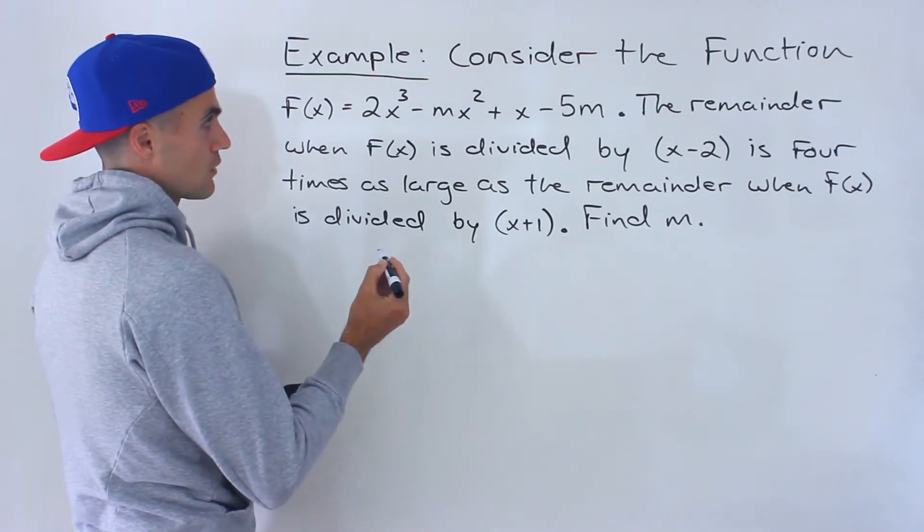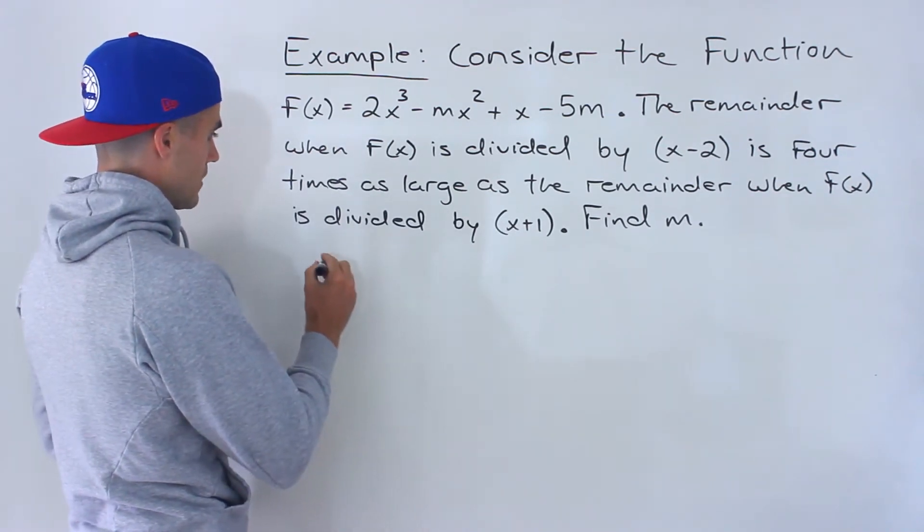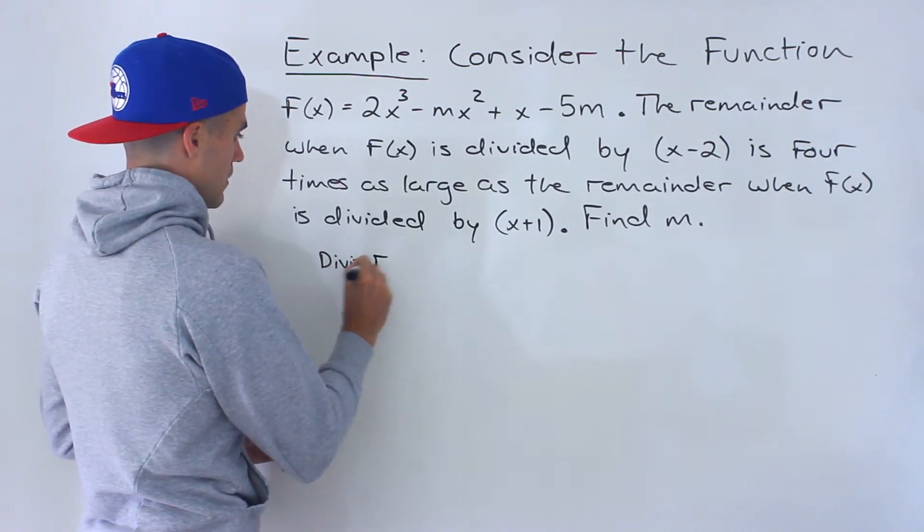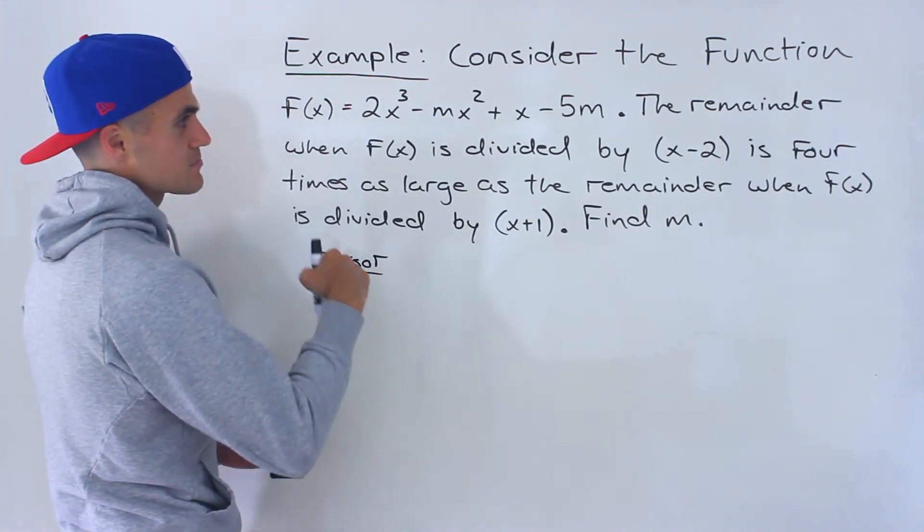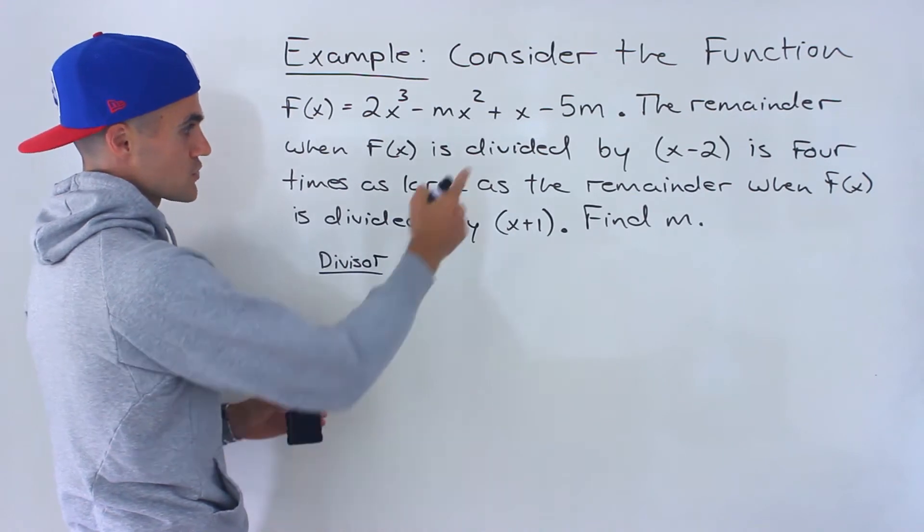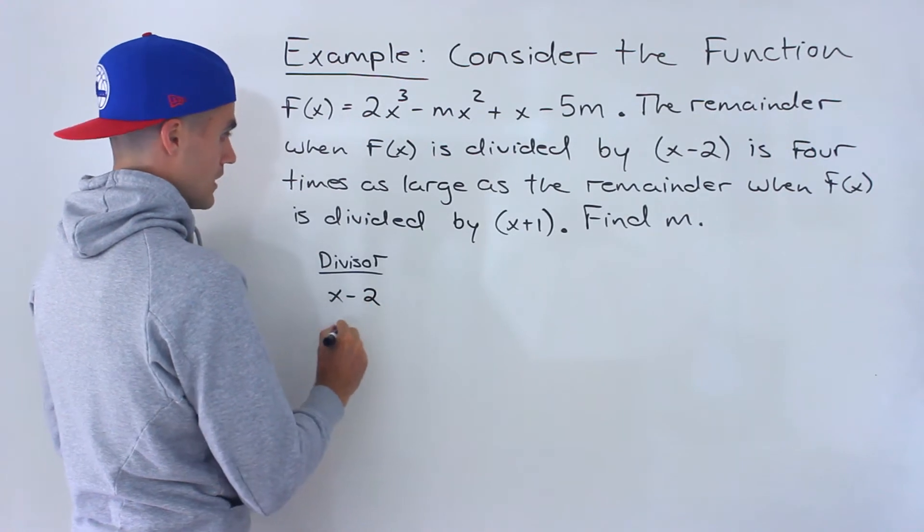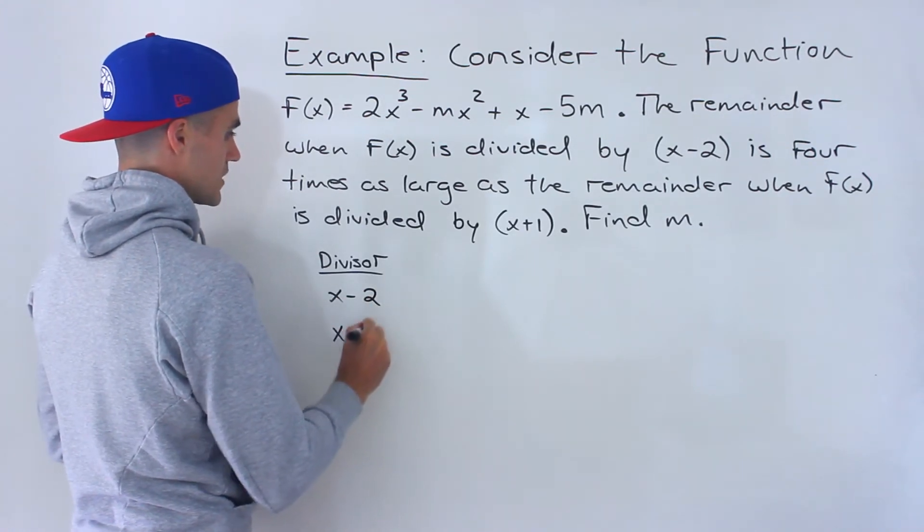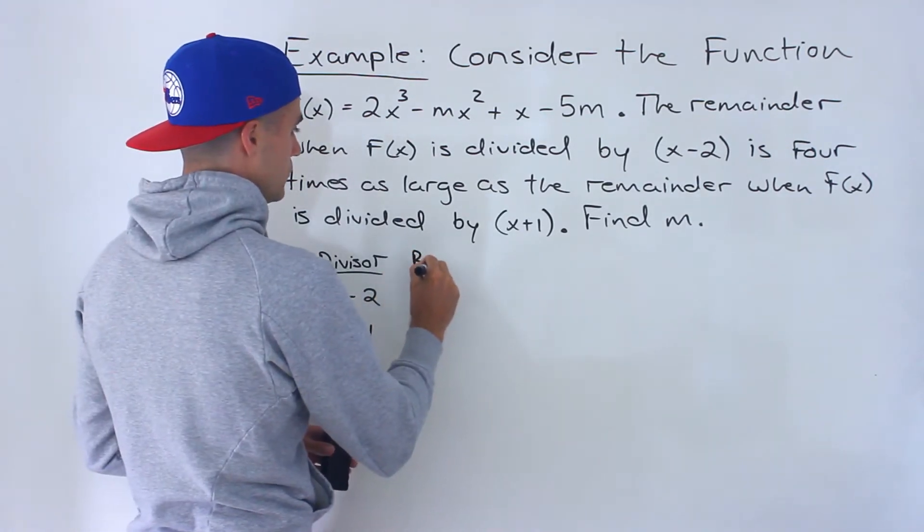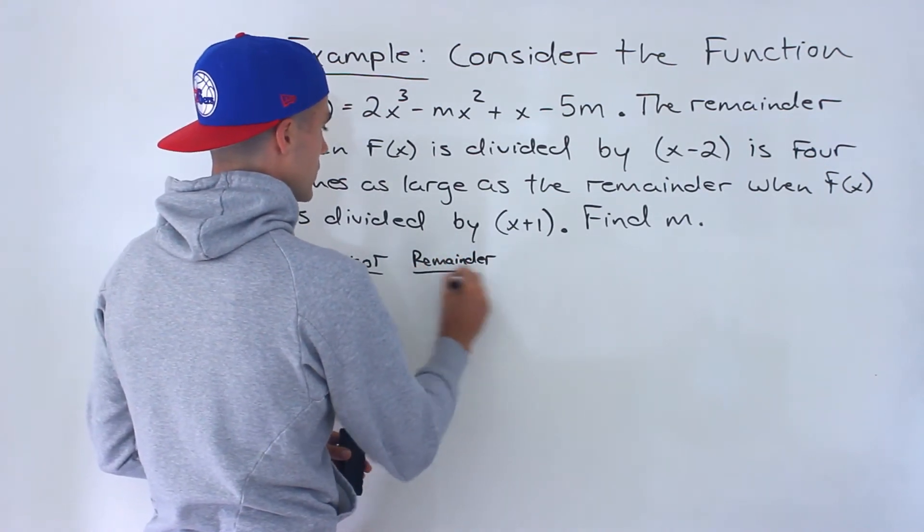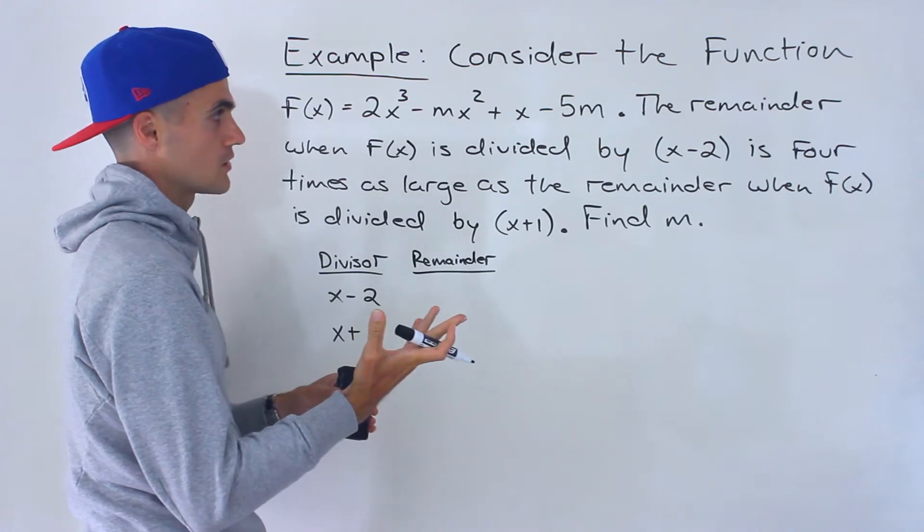Basically going to use the remainder theorem. There's going to be some algebra involved. Now what we want to do is create expressions for the remainders for these two divisors: x minus 2 and x plus 1. So we'll write the two different expressions for the remainders.